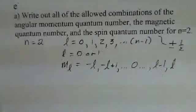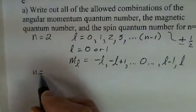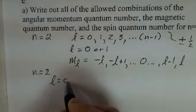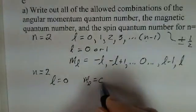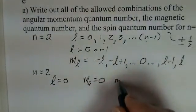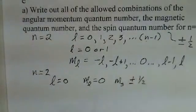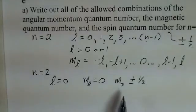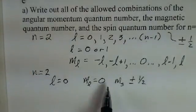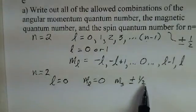So what do we have for n is equal to 2? Well, one case is L is equal to 0. If L is equal to 0, m sub l is 0, and then m sub s is the spin quantum number. To save space, I'll just write plus or minus a half, but there are two sets here: 2, 0, 0, plus a half, and 2, 0, 0, minus a half.